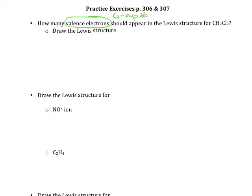Let's look at the compound CH2Cl2. Carbon is in group 4A, which means carbon brings four valence electrons. Hydrogen is in group 1A, which means hydrogen brings one valence electron, but there are two of them. Chlorine is in group 7A, so it brings seven valence electrons, but there are two of them. Adding four plus two from hydrogen plus fourteen from chlorine gives us a grand total of 20 valence electrons to use when we make this Lewis structure.